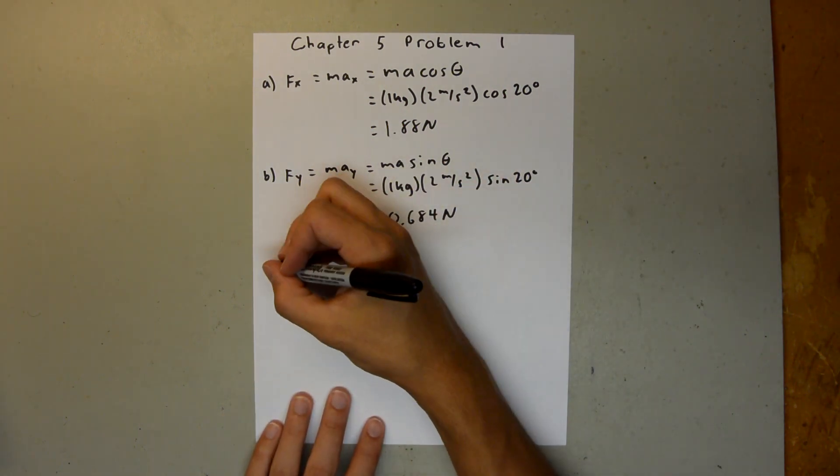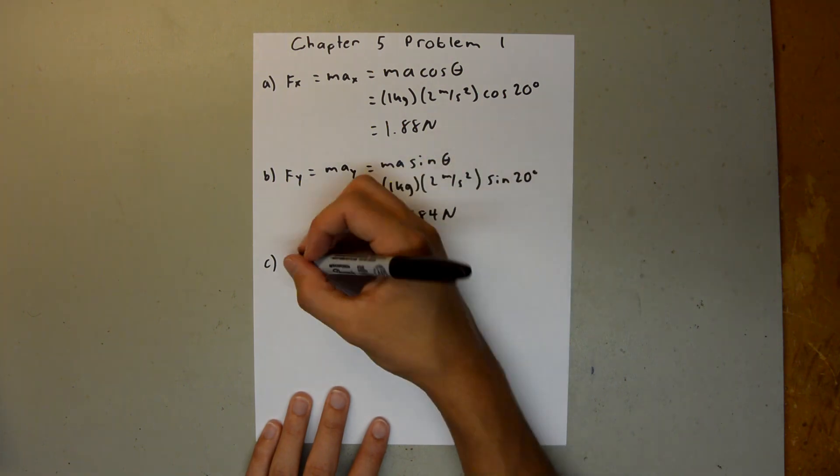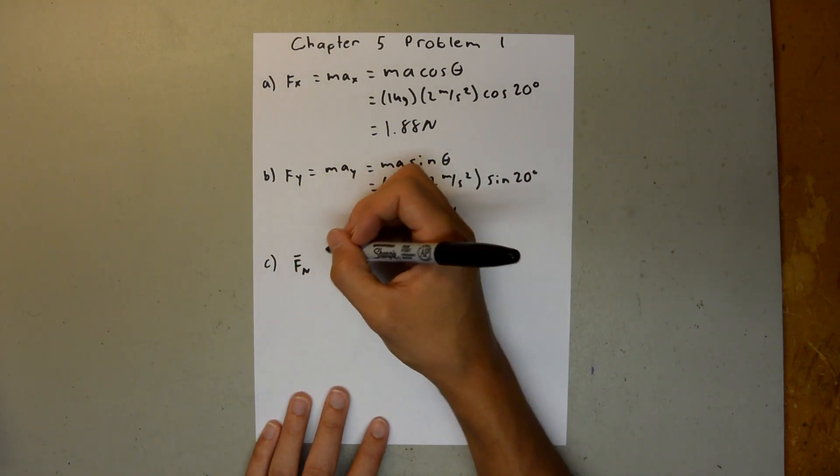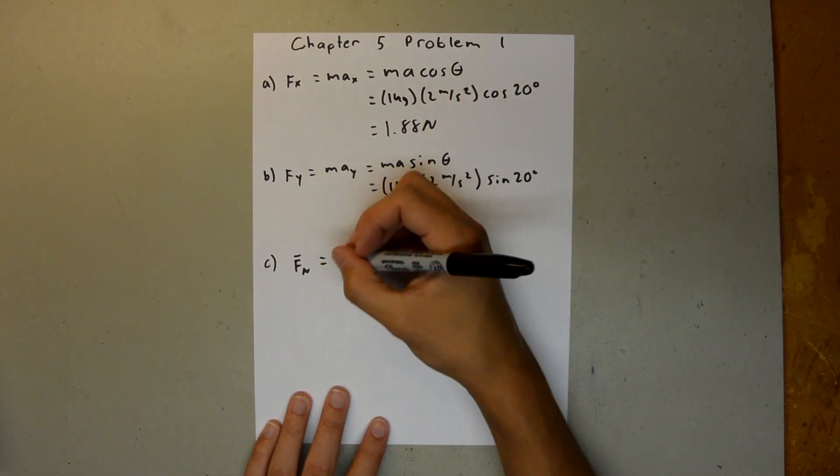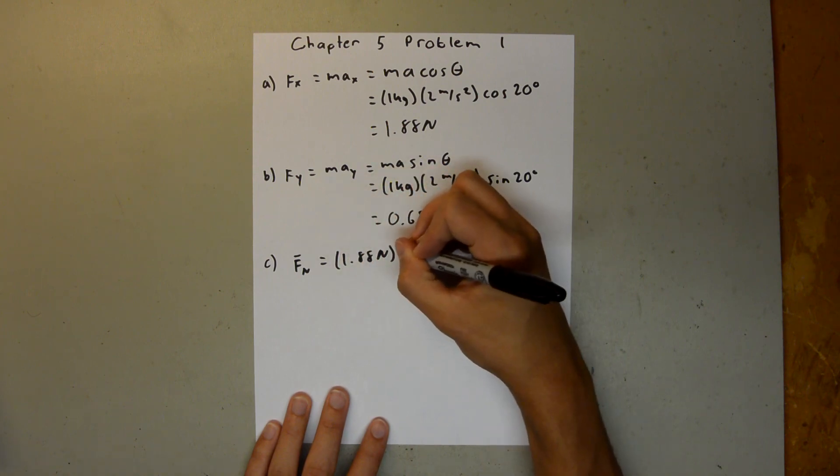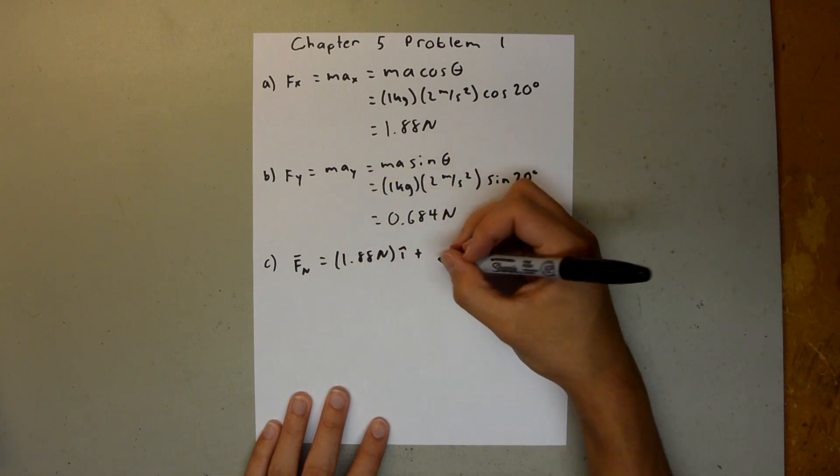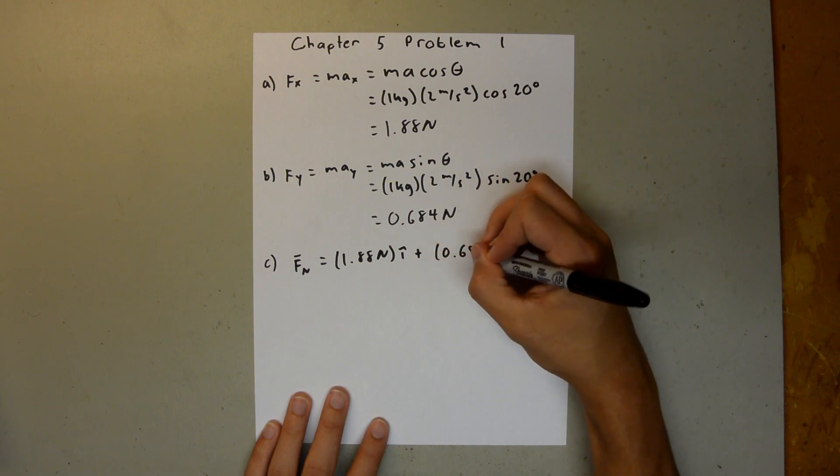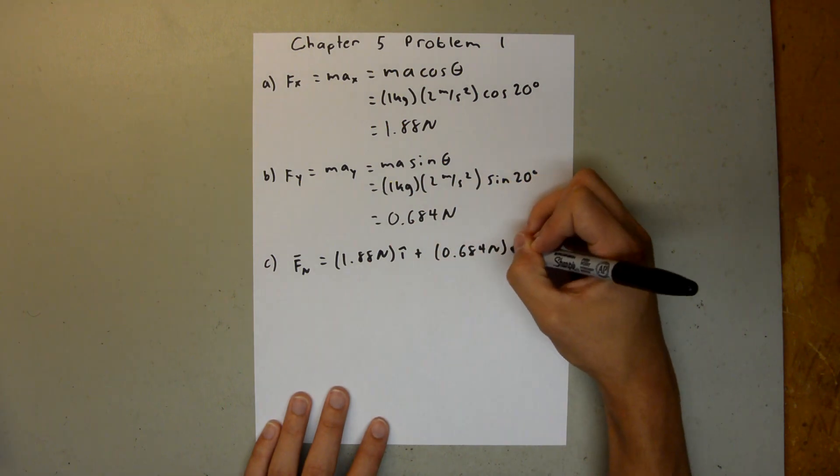And now for Part C, we can write this in unit vector notation. Our net force is going to be equal to our x-component, 1.88 newtons i-hat, plus our y-component, 0.684 newtons j-hat.